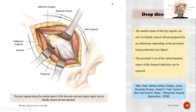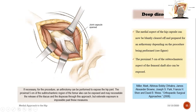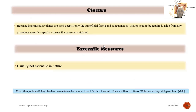As described, this is the iliopsoas, this is the adductor brevis, and over it the adductor longus and gracilis; behind it, the adductor magnus, and then the iliopsoas and joint capsule. You can now open the joint capsule to perform joint aspiration, septic arthrotomy, biopsy, iliopsoas tenotomy, or reduction for developmental hip dysplasia. For closure, since intermuscular planes are used deeply, only the superficial fascia and subcutaneous tissues need to be repaired, aside from any procedure-specific capsular closure if the capsule was violated. This exposure typically does not require extensile measures.